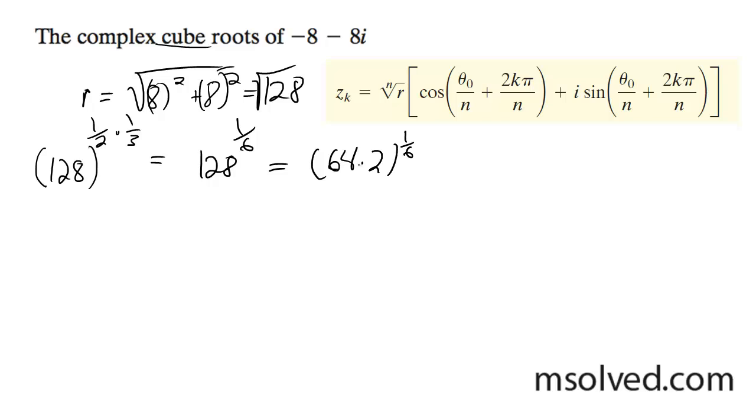2 raised to the 6th is equal to 64, so what this ends up being is 2 times 2 raised to the 1/6. But you can just rewrite this as 2 raised to the 7/6 because 2 equals 6/6 and you add exponents.